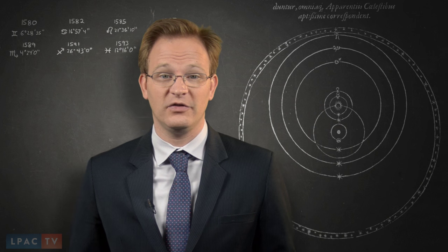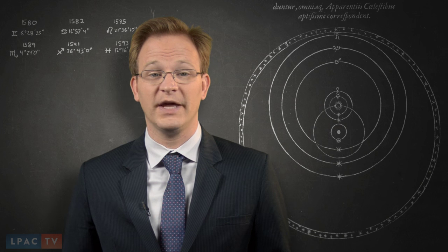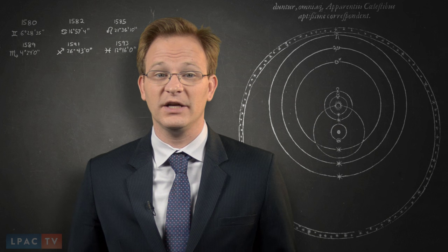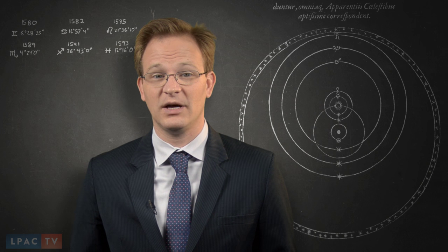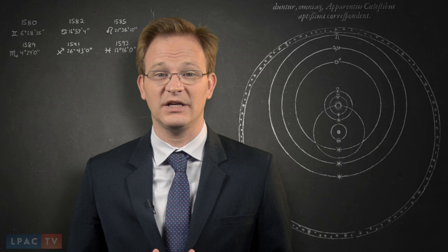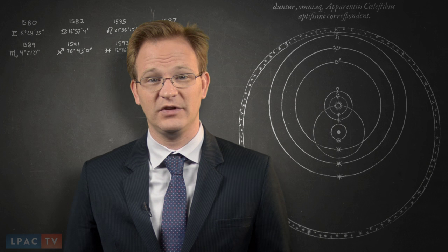Earlier from his observatory Uraniborg on the island of Venn, Brahe had set up a scientific laboratory with a number of employees to aid in the making of observations, tabulating data and calculating planetary positions.